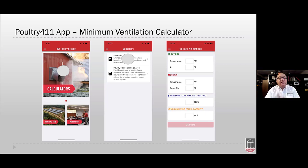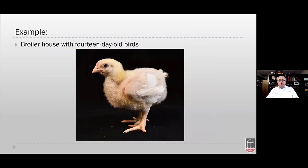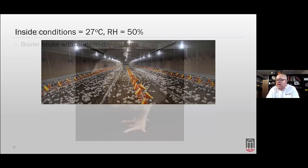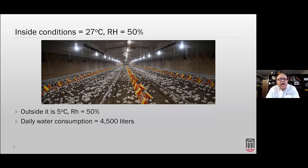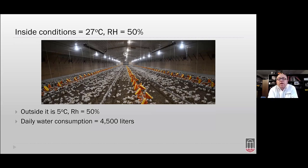You input the fans you want to use for minimum ventilation, and the app determines how long they need to run to remove a given amount of water under the conditions you input. For example: a broiler house with 14-day-old birds, inside conditions 27°C at 50% humidity, outside 5°C at 50% humidity, and daily water consumption of 4,500 liters. I don't care how many birds are in the house — all I need to know is how much water is going in to balance my ventilation.